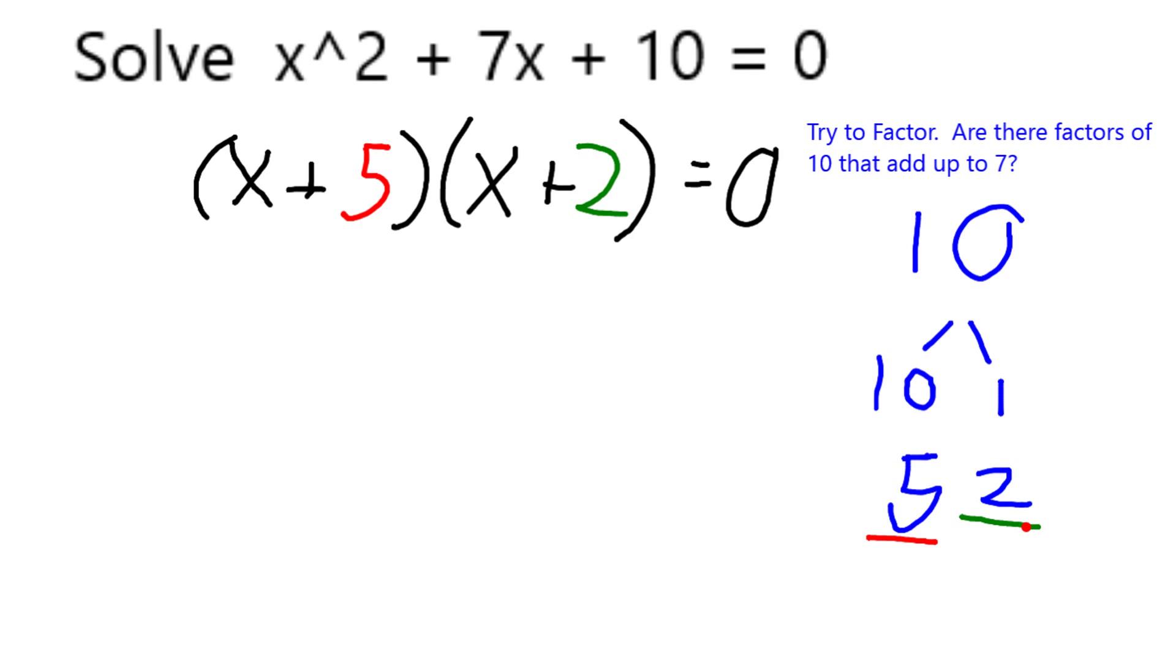The reason I can do that is if I were to FOIL and multiply x plus 5 times x plus 2, I would get back to my original equation. So these two first statements are equivalent.